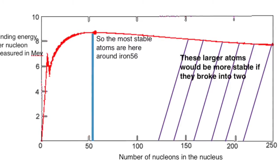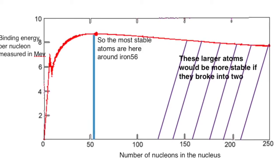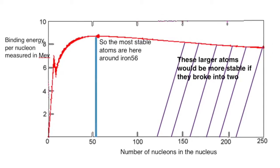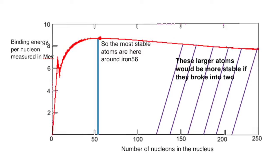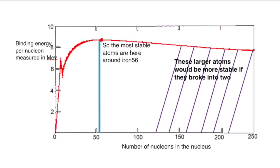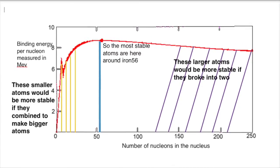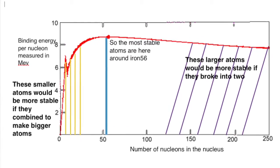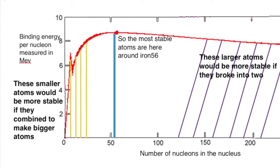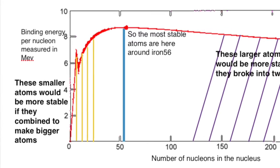So, the large atoms shaded here are more stable if they break in two, they will have a greater binding energy per nucleon. Smaller atoms, particularly hydrogen and perhaps helium, would be more stable if they combined to make bigger atoms.